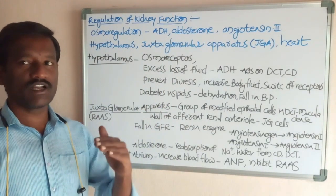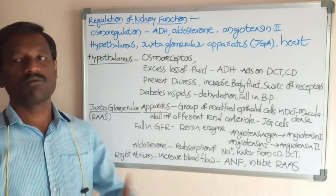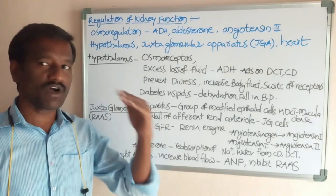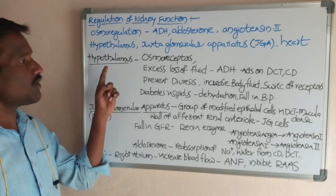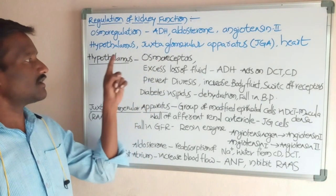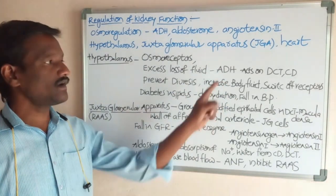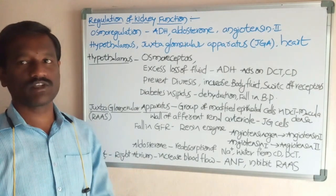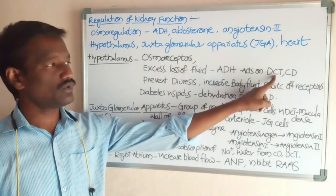The osmoreceptors detect excess loss of fluid from the body of human beings and send signals to the hypothalamus. When signals are received, the hypothalamus is stimulated and secretes anti-diuretic hormone, also called vasopressin.